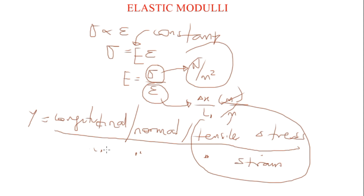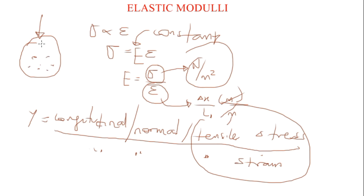The Young's modulus depends only on the composition of objects; it does not depend on the size or shape of objects. For example, suppose you exert a normal stress on a material — the molecules of the material are the ones that are affected. If the material compresses, it is because the molecules rearrange themselves to form a flattened substance. As a result, Young's modulus only depends on the composition, not the size or shape.